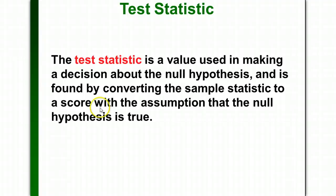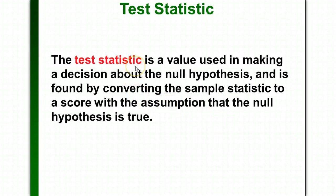The test statistic is just a value used in making the decision about the null hypothesis. It's really just a z-score, or once we get into a couple sections further, what we call a t-score. It's found by converting what we get from our sample data to either that z or t-score. Remember, the bigger the z-score, the bigger the number of standard deviations something is from the mean, the more rare it is. The test statistic tells us how many standard deviations what we're seeing is away from the actual claimed mean — the bigger it gets, the more rare the value from your sample is.